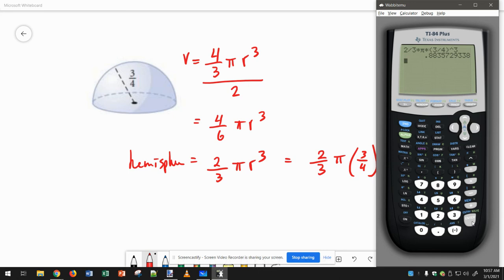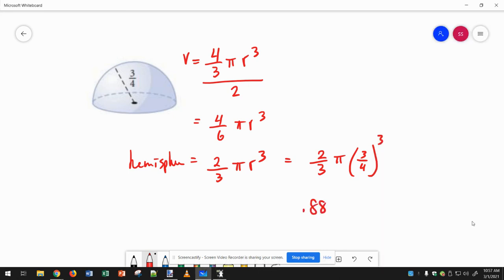The next digit is a 3, which is less than 5. So 0.88 cubic units.